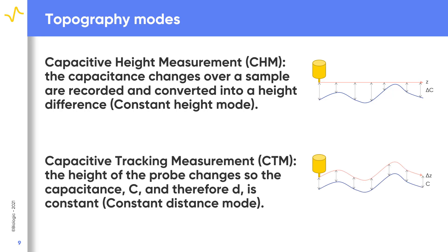Capacitive tracking measurement, or CTM, is the second measurement option. In this constant distance technique, the probe-to-sample distance is maintained throughout the measurement by moving the probe in Z to maintain the measured capacitance. In this case, the probe position is plotted throughout the measurement to map the sample topography. CTM is particularly useful for non-flat samples, for example curved pieces. However, because the probe position changes throughout the experiment, CTM measurements are slower than CHM measurements.